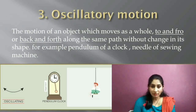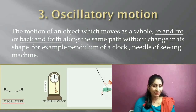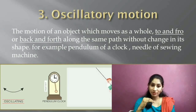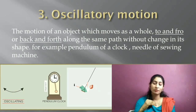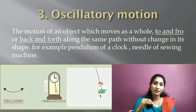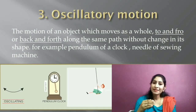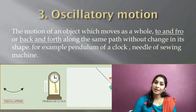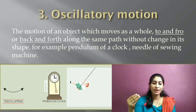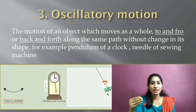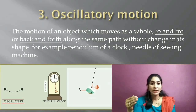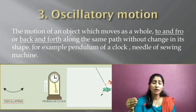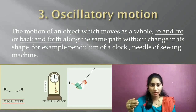Another example of oscillatory motion is the needle of a sewing machine — it moves up and down repeatedly. In our next class, we will study vibratory, periodic, and non-periodic motion, which are also kinds of oscillatory motion.